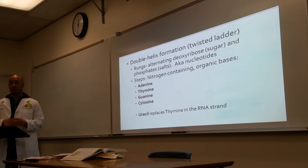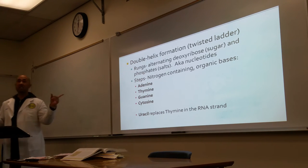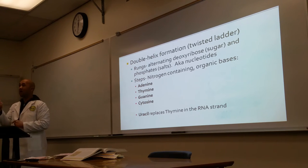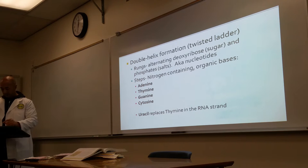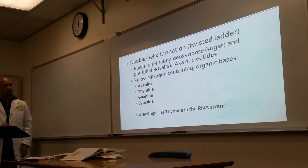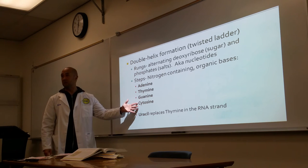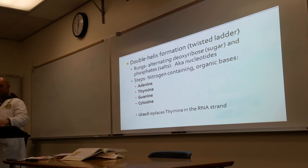DNA and RNA look similar in structure, but DNA has a double helix — two sides twisted together. RNA only has one side but also has a helix formation. It is the combination of these bases that determines the function of that particular cell.